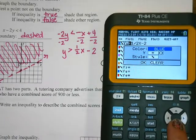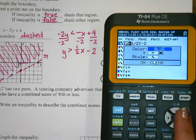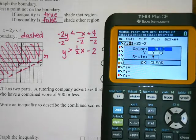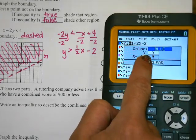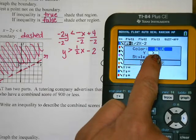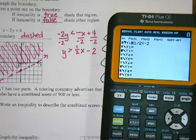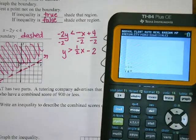You can change the color if you want. See how if you arrow down, it's blinking on the equal sign — you can scroll through to change it to what you want. There's a less than or equal to, there's a greater than — that's the one that I want. Now I'm going to push enter, and as you notice it has a dotted line and it's shading above. That's what we want — a dotted line and shade above it. Push okay, and now push graph.